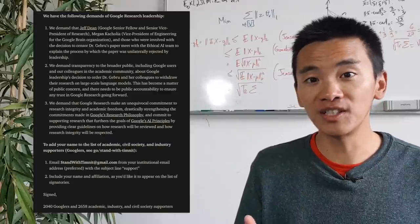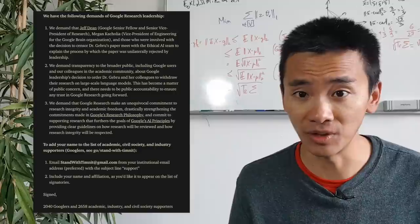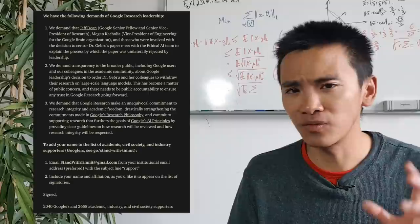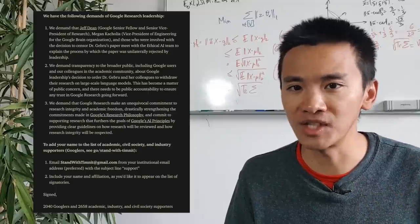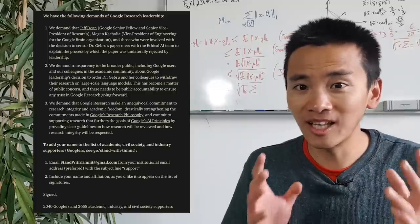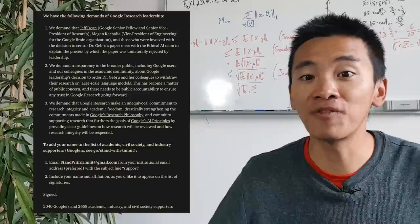So 2,040 is a lot, but Google is almost 100,000 employees, so it's still a small fraction of all of Google's employees. And as for 2,658, well, this is almost disappointing. What I'd like is for these numbers to be at least in the orders of the tens of thousands.